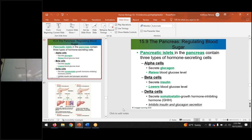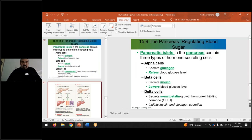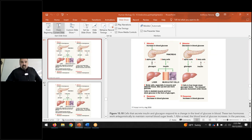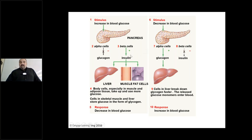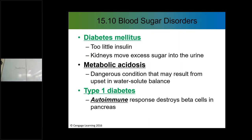Insulin and glucagon have opposite effects — they're trying to either reduce the level of blood glucose or increase the blood glucose levels. You can see the action of insulin and glucagon and how they act in opposite ways with regard to blood glucose levels. Different disorders can take place as a result of having issues with management of blood glucose levels.